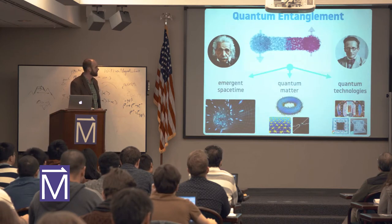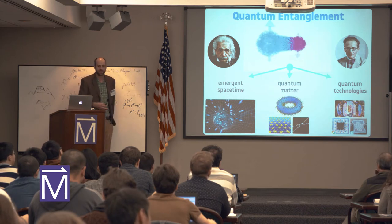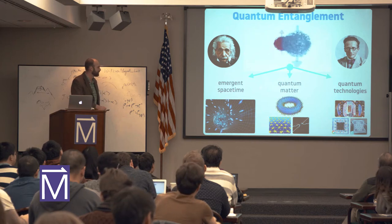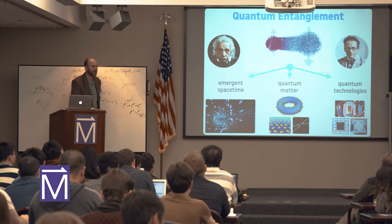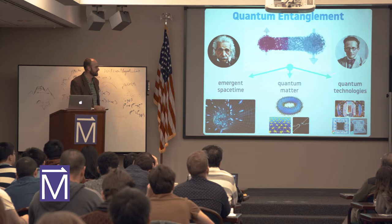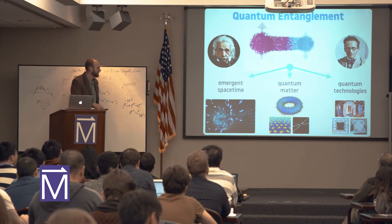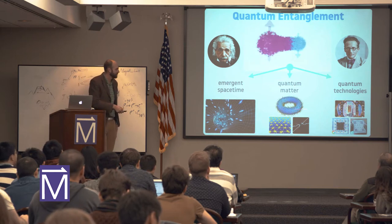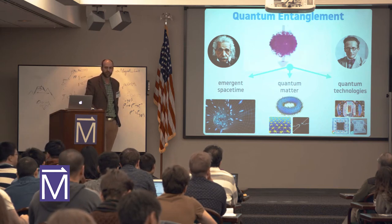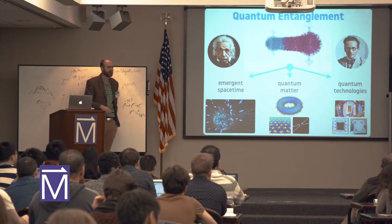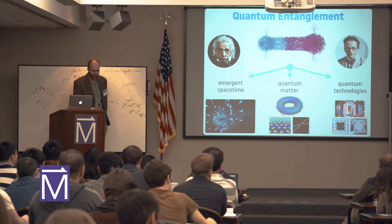So far in this school, we've seen that entanglement is really a language to understand all of these different things. We can somehow unify emergent space-time, quantum matter, and quantum technologies. My perspective is: how do we put these two things together? How can we extract or measure the amount of entanglement in quantum matter, and how could we use that in some quantum technologies?